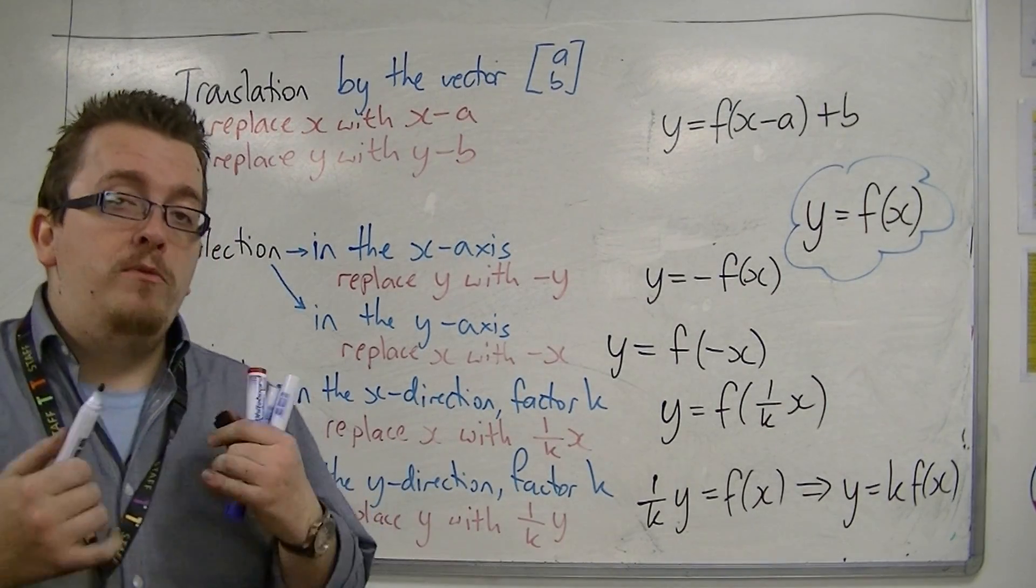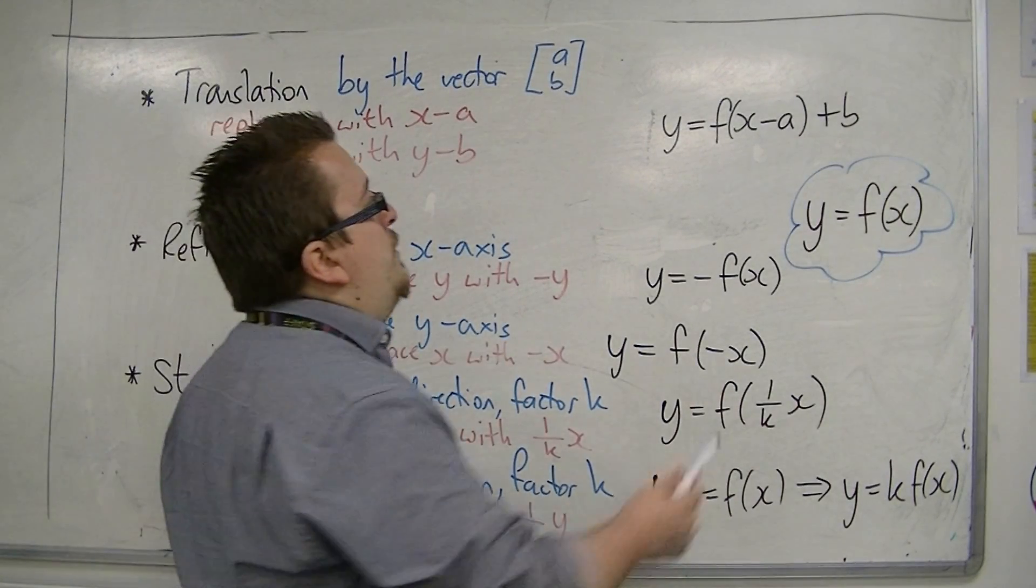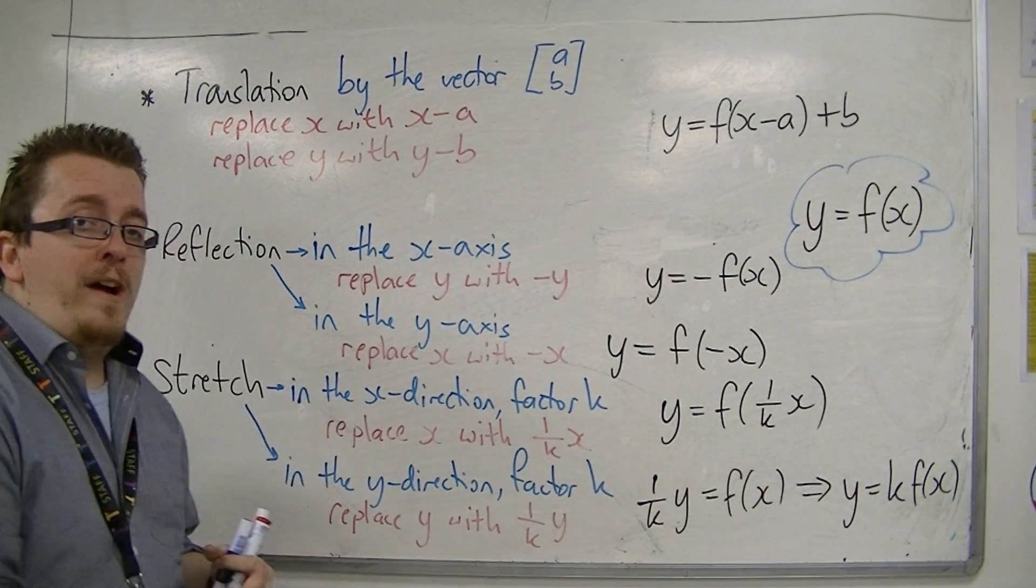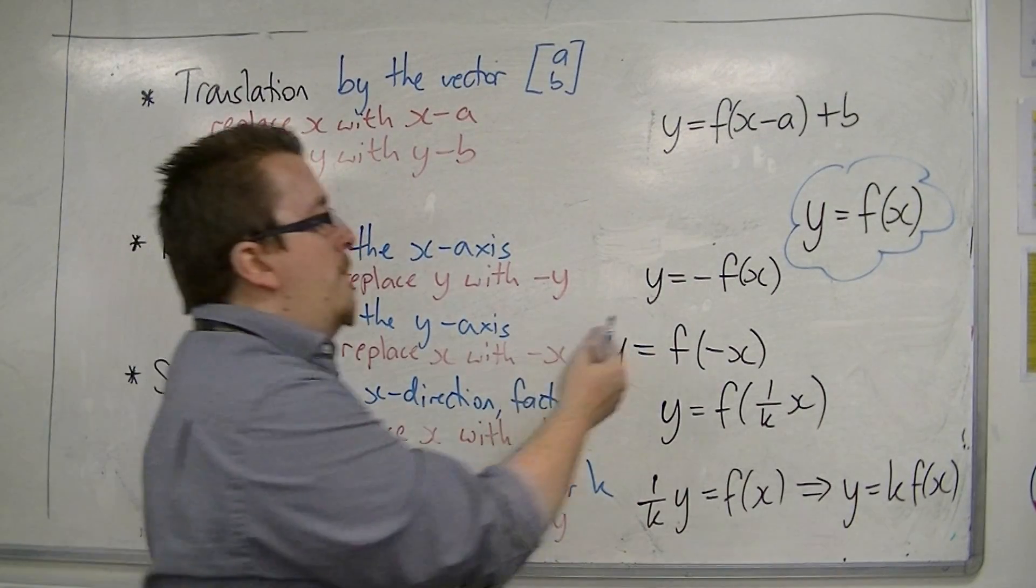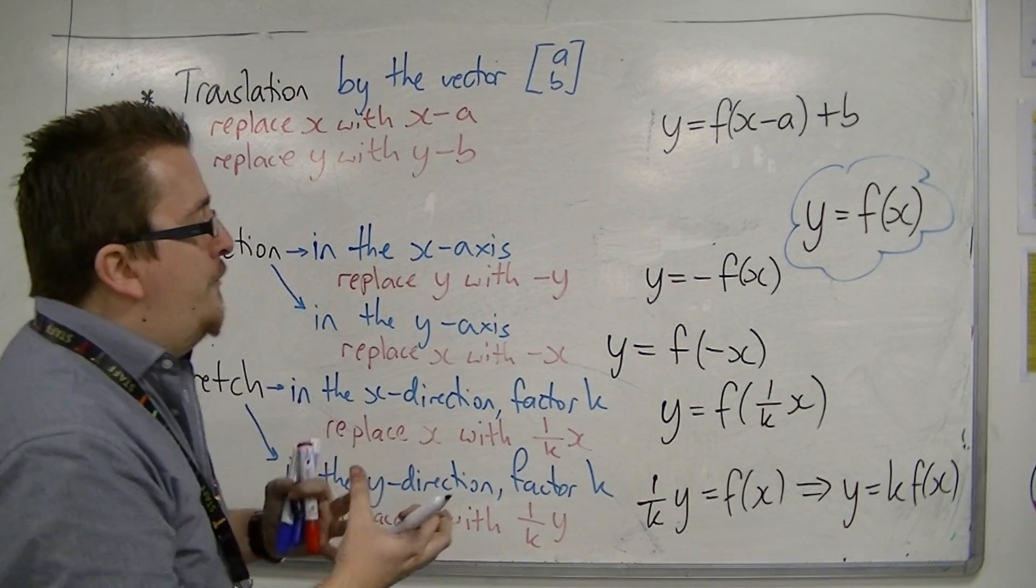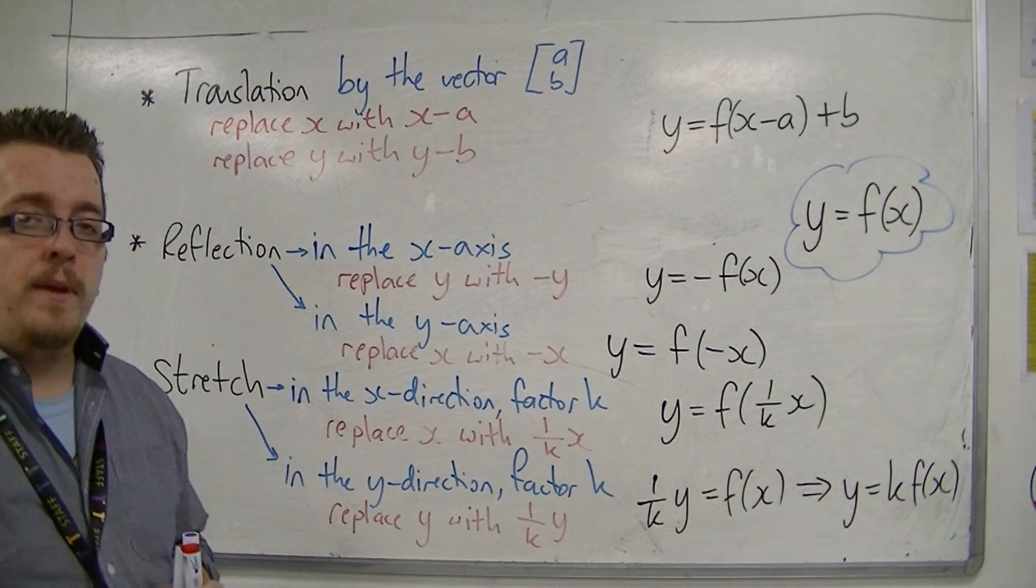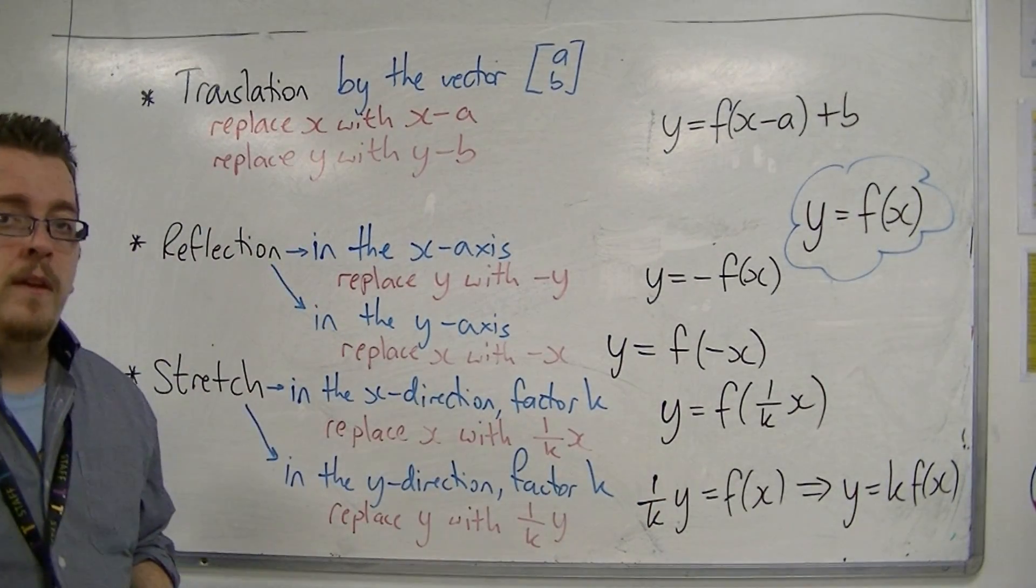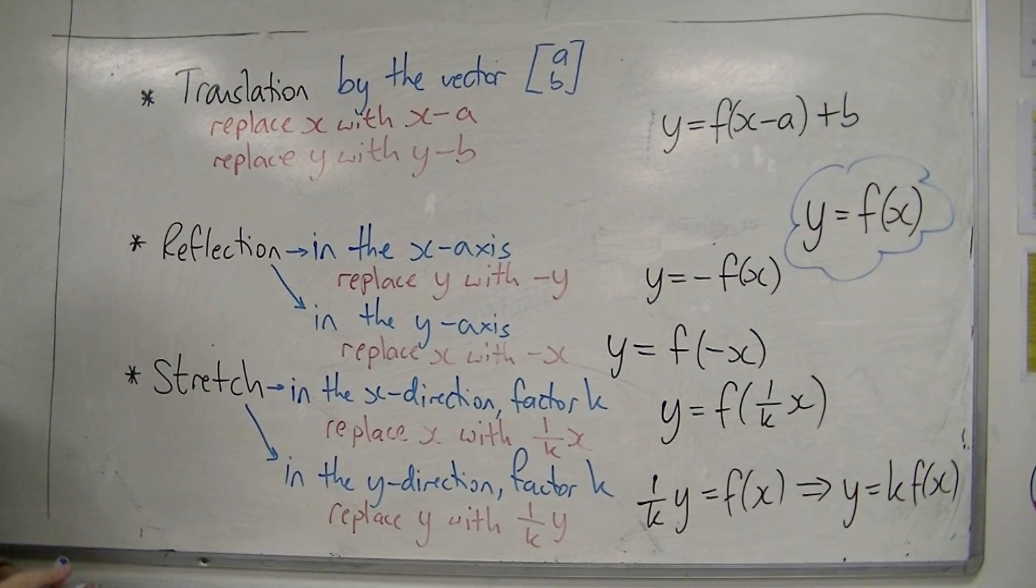Now, what that means is that you need to be able to hone your skills of being able to spot which type of transformation it is. If you've got adding or subtracting of numbers inside the bracket or outside, it's going to be a translation. If you've got a minus the whole function, or a minus inside the function like minus x, then that will be a reflection. And if you have a number in front of the x has suddenly appeared, or a number outside of the whole bracket has suddenly appeared, then it's going to be a stretch, and you need to determine whether it was inside the bracket or outside. In the next video, we're going to go through some examples, just so you can see how you can identify which would be which.